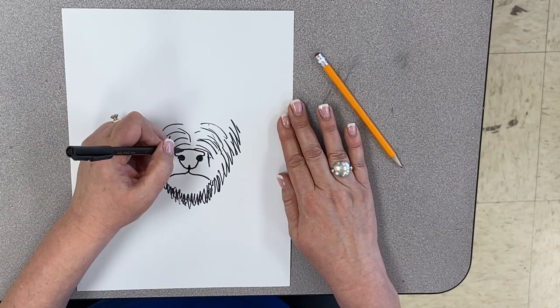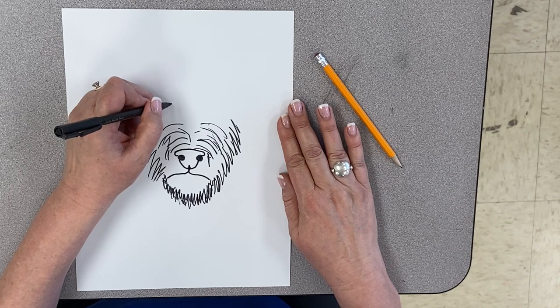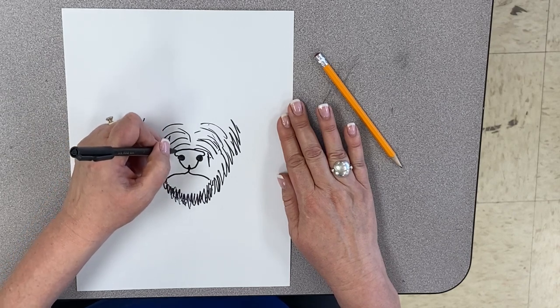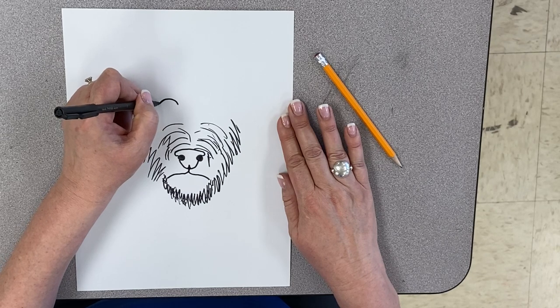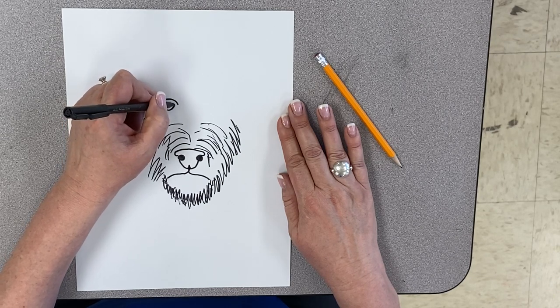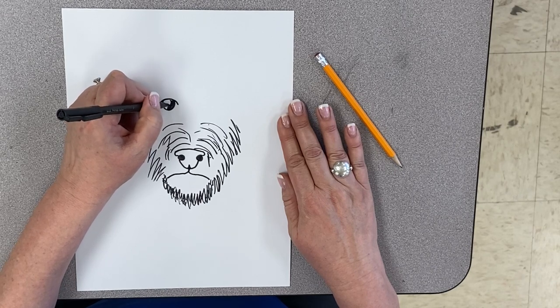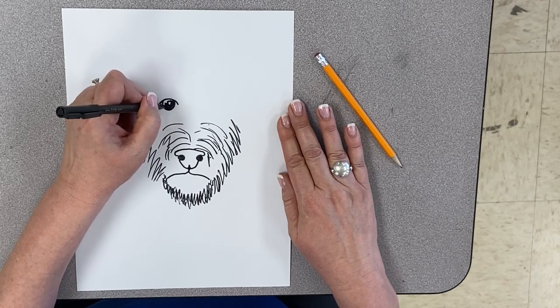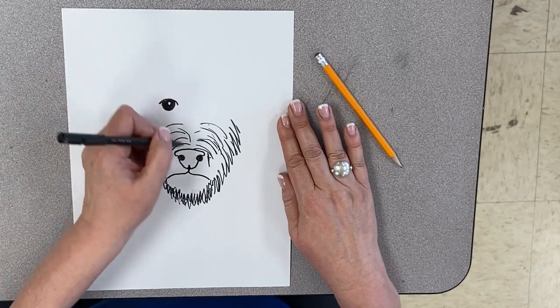Then we've got some eyes up here. His eyes are kind of right on the side of his nose and we're going to draw a line coming like this and then draw a line coming like that. And then we're going to fill this in and leave a little sparkle light there for where the light shines off of his eye.